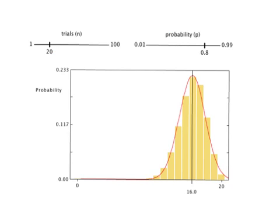So what I've done now is I have increased the number of trials. So now we're not shooting 10 free throws, you're shooting 20 free throws. And notice the mean now is 16, okay? It's n times p, 20 times 0.8.